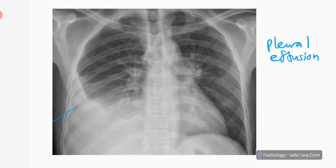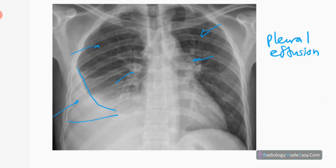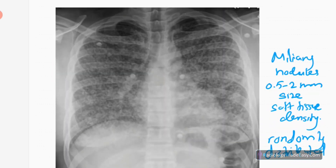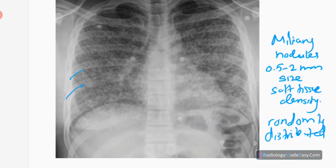Next is pleural effusion. You can see a right-sided pleural effusion with a meniscus-like appearance and an obliterated right costophrenic angle. There are no consolidations, no hilar prominence, no fibrosis, and no cavity formation. This is a simple pleural effusion, probably due to pleural-based TB, as pleural TB can cause pleural effusions.